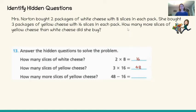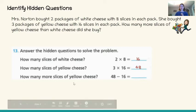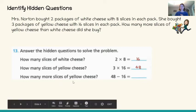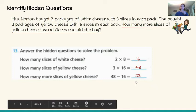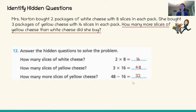Remember, our final question is how many more slices of yellow cheese than white cheese did she buy? So we're not finished yet. We've answered the two hidden questions, and now we need to use that information to solve our final question. How many more slices of yellow cheese? This is a subtraction problem. Forty-eight minus sixteen equals thirty-two. We took the yellow cheese slices and took away the number of white, and that gives us the difference. Thirty-two more slices of yellow cheese than white cheese.